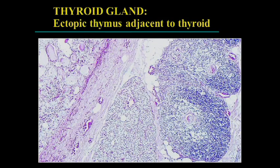Many times adjacent to the thyroid, particularly when they're doing surgery, they'll send you something asking whether it's a lymph node. You can see parathyroid tissue, sometimes thymus-like ectopic tissue. Sometimes it's actually lymph nodes. So it's not uncommon to see these structures adjacent to the thyroid.